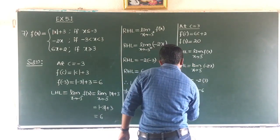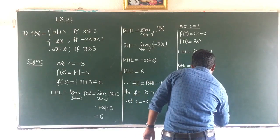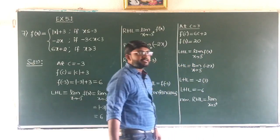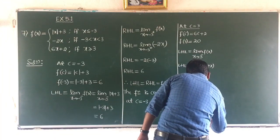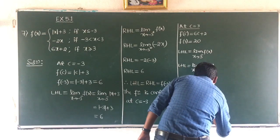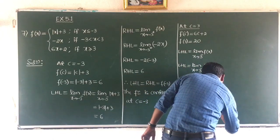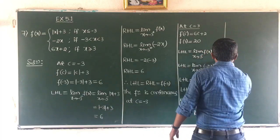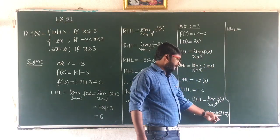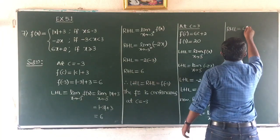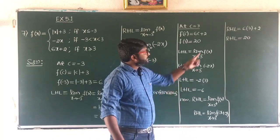For the right hand limit, RHL equals limit as x tends to 3 plus of f(x). Since 3 plus means greater than 3, the function is 6x plus 2. Applying the limit, 6 into 3 is 18 plus 2, so RHL equals 20. But LHL is not equal to RHL.